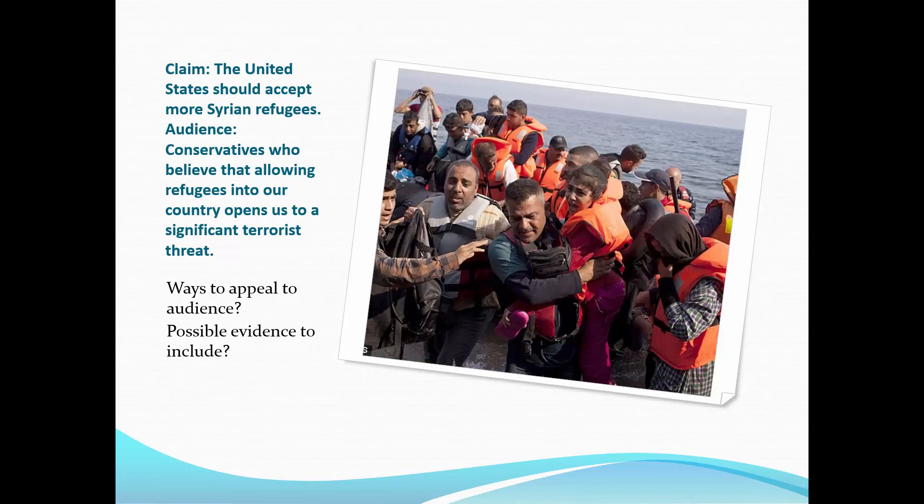The last example I'm going to talk about here is: the United States should accept more Syrian refugees. The audience might be conservatives who believe that allowing refugees into our country opens us up to a significant terrorist threat. So how might we appeal to this audience? Their fear is that if we let people in from Syria or these countries, whether they're Syrian or not, we may get someone who wants to do us harm in the mix. Their fear is that there's not a very good vetting process — often refugees are fleeing their country without paperwork or acceptable documents, so there's no good way to trace whether or not they have a criminal background or criminal intent, or that we may let in someone who has already been radicalized.